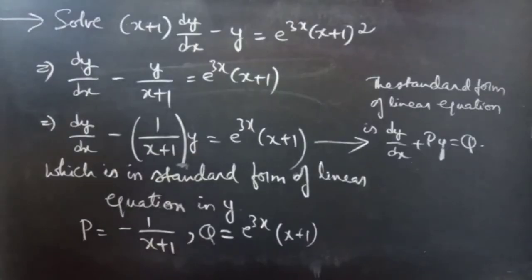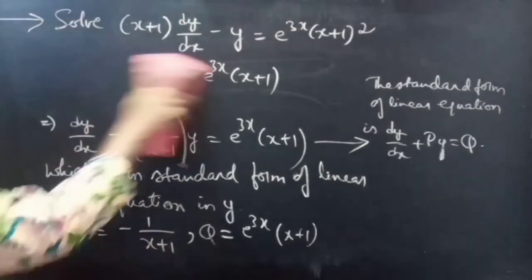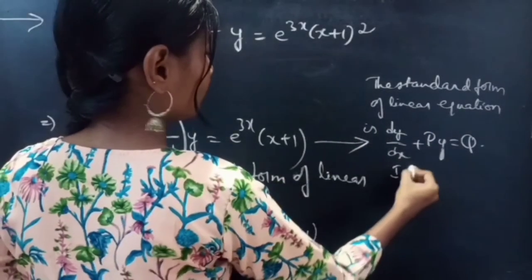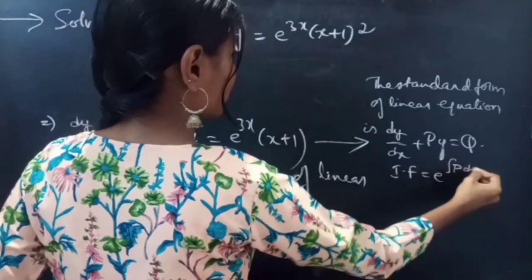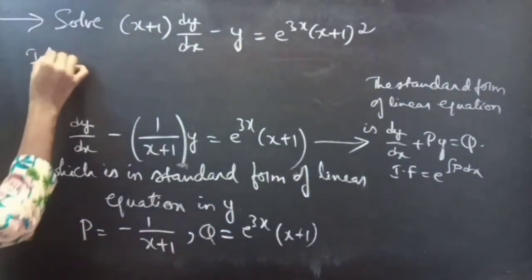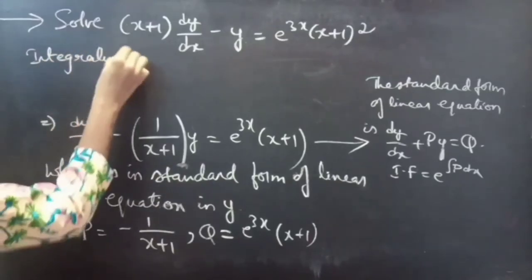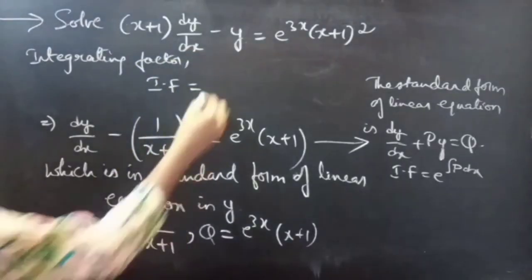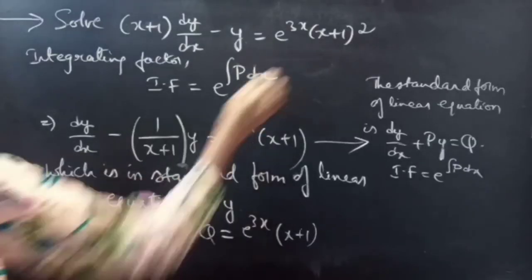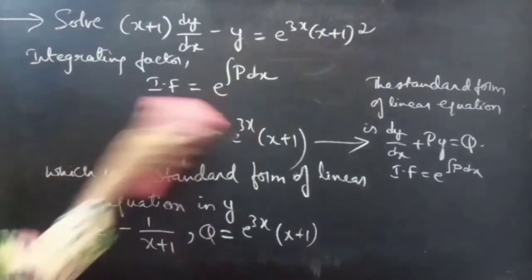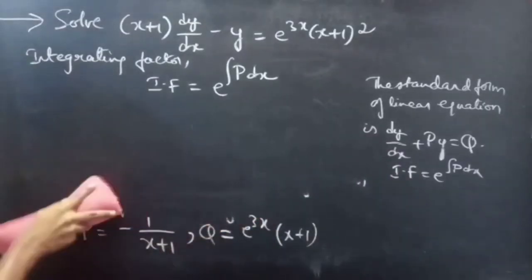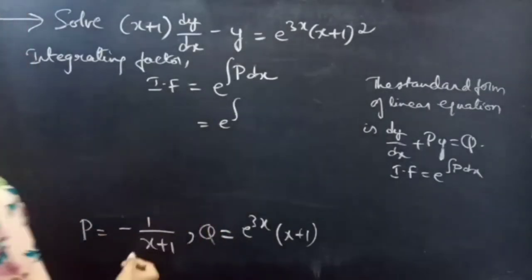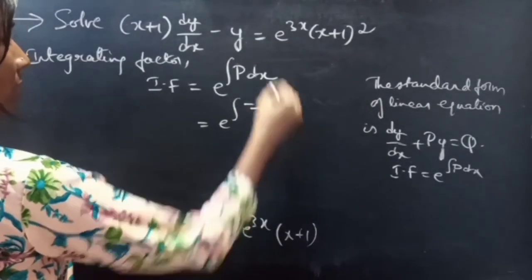Now you need to find the integrating factor. The integrating factor of a linear equation is given by e^(∫P dx). So, Integrating Factor (IF) equals e^(∫P dx), which is e^(∫ [−1/(x+1)] dx).